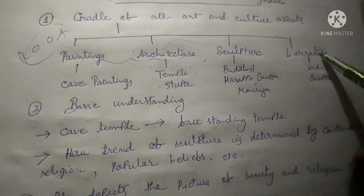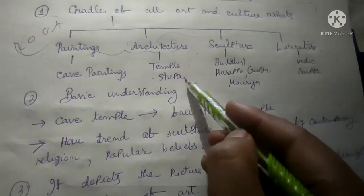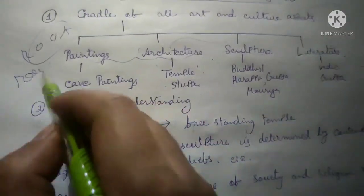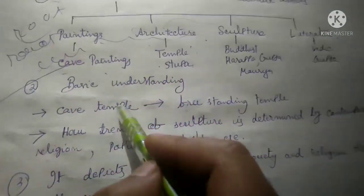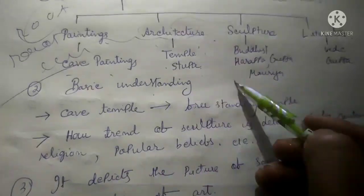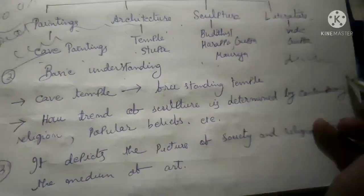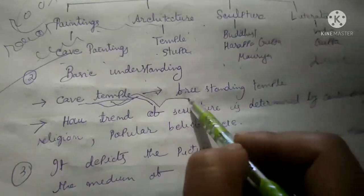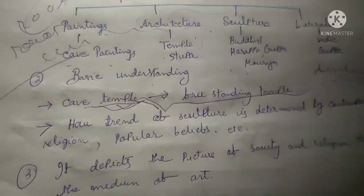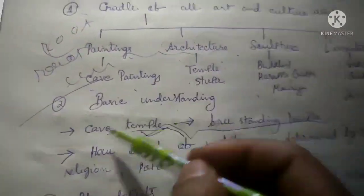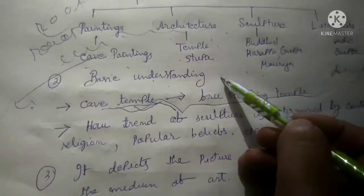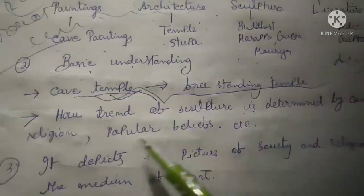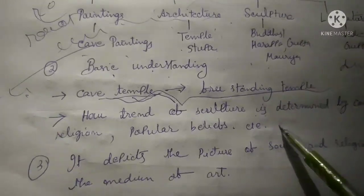The second point is that ancient India provides a basic understanding, because it is the root of each and every art and culture aspect. If you do not read this thoroughly, you will not develop a basic understanding in later parts. For example, how the cave temple turns into a freestanding temple in later phases — to understand this intricacy you need to know in what situation cave temples were initiated in ancient India.